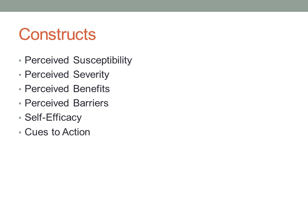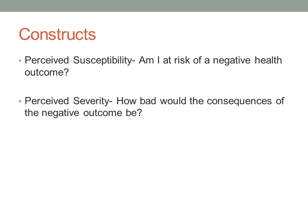The first two constructs address the threat that the individual perceives from negative health outcomes. We have perceived susceptibility — am I at risk of a negative health outcome? — and perceived severity — how bad would the consequences of that negative outcome actually be? These two together are your scare factor, but addressing only these without the other constructs can cause a feeling of helplessness, so we have to watch out for overdoing them.